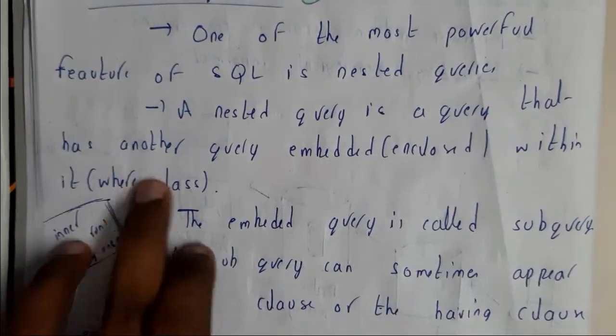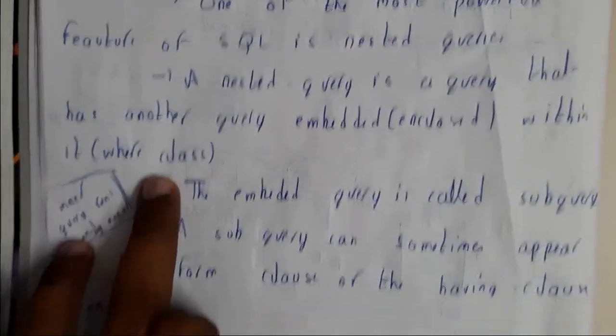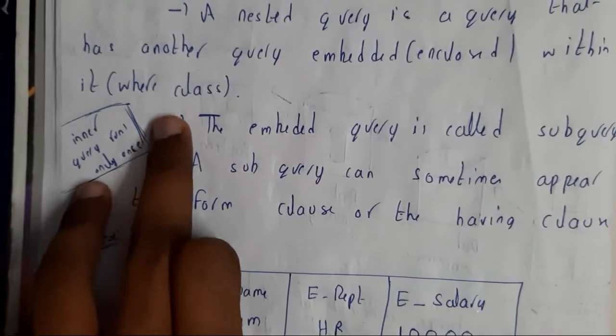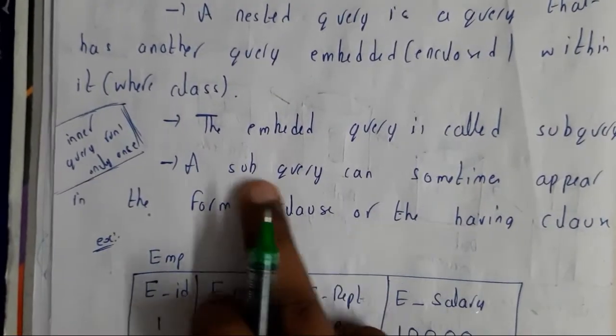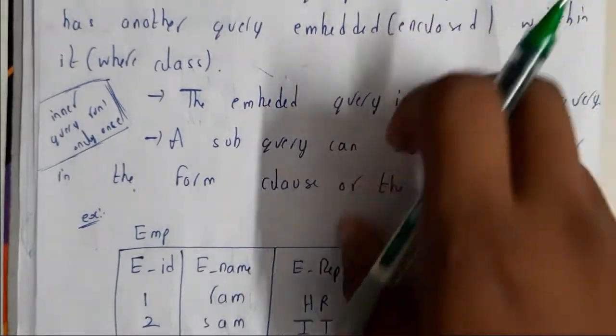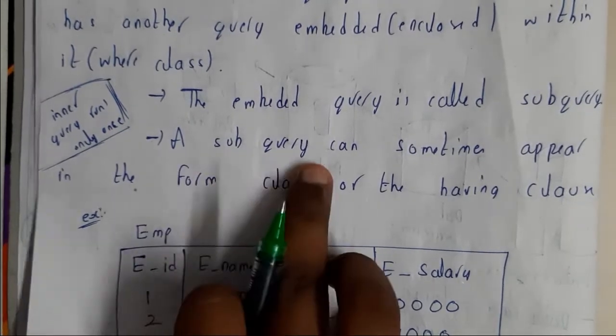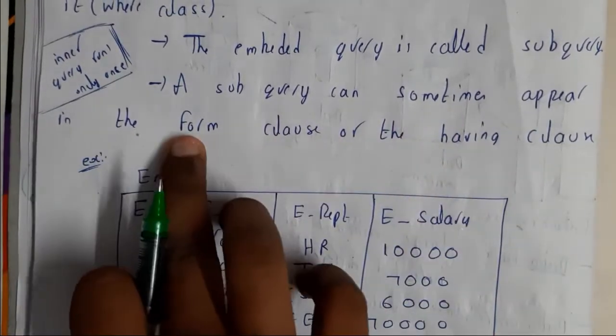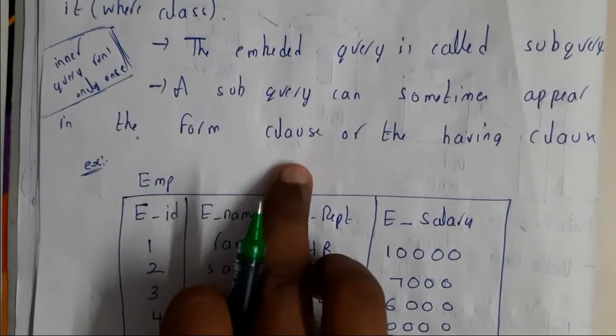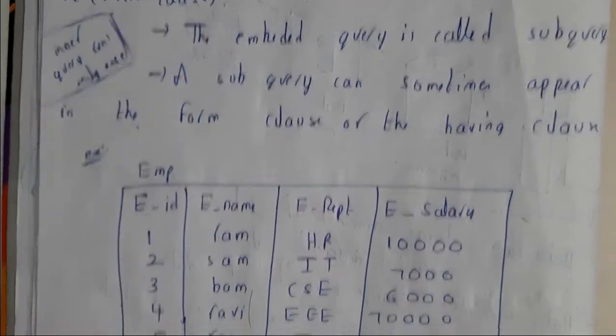A nested query is a query that has another query embedded or enclosed within the WHERE clause. The embedded query is called a subquery. A subquery can sometimes appear in the FROM clause or HAVING clause also.